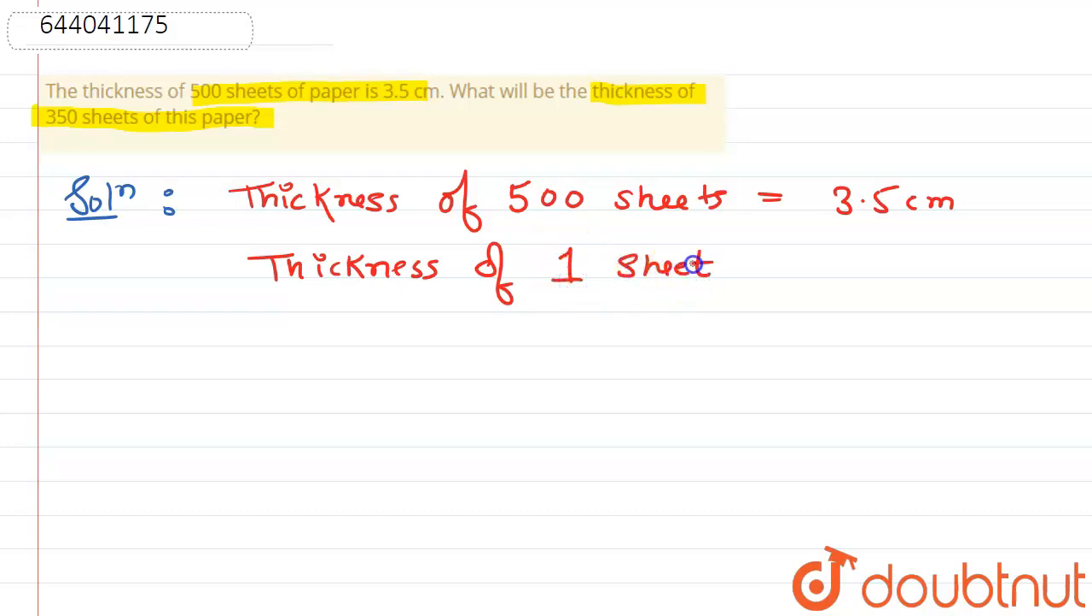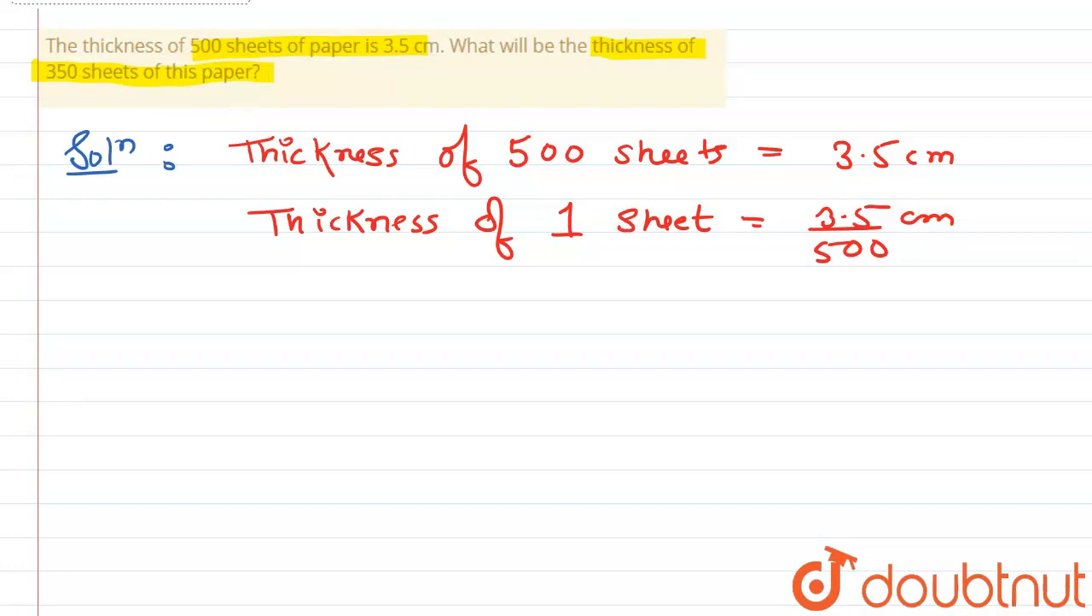So here we have to find thickness of 350 sheets.